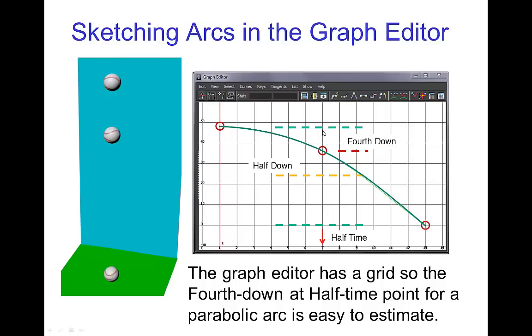Now, we want at this frame, we want the ball to be a fourth of the way down. Again, using the grid, it's pretty easy to see that this is halfway down, and then between the apex and halfway down is a fourth of the way down. So, this is where we put that keyframe, and with that we already basically have a nice parabolic arc.